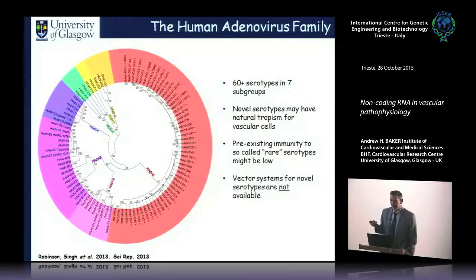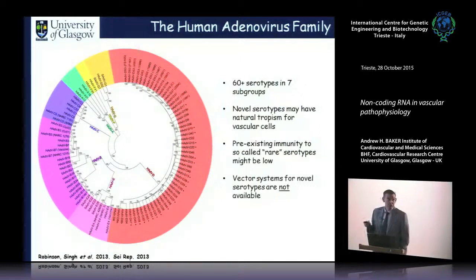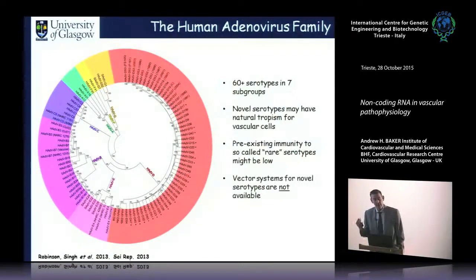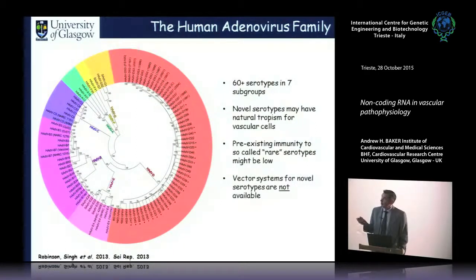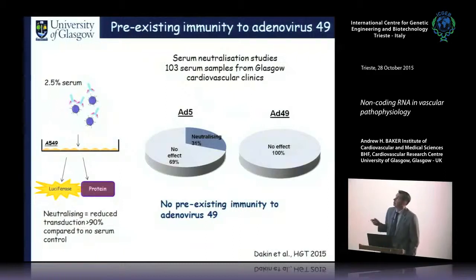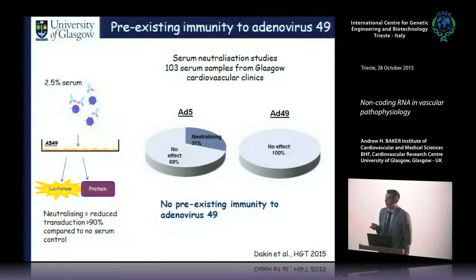We're interested in D-group viruses. Two critical considerations for gene therapy are pre-existing immunity and efficiency. From the CUPID study on AAV1, 70% of eligible patients became ineligible due to pre-existing neutralizing antibodies. With adenovirus 5, pre-existing immunity is about 30% in Glasgow but around 70% in the US. We've been developing alternative vectors through EU programs to address this.